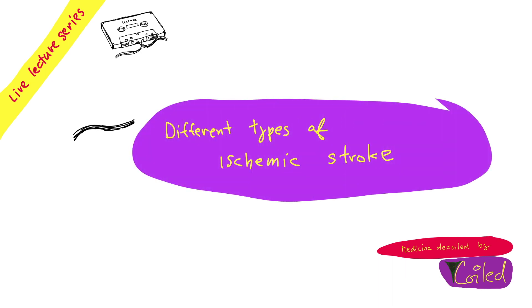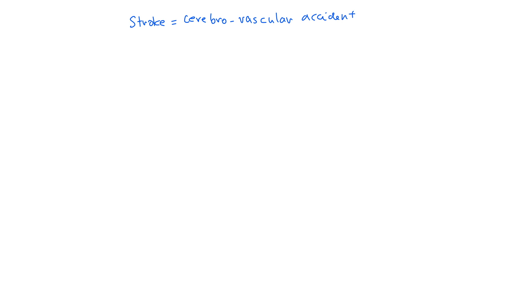Now we're going to get to the interesting part: different types of stroke. Until now we were talking only about ischemic strokes, but you know there are other ones. First, let's divide strokes — the major division. The other term you can use for stroke, which is more popular in formal settings, is cerebral vascular accident, or CVA. Same thing — just for people who like to talk a lot.